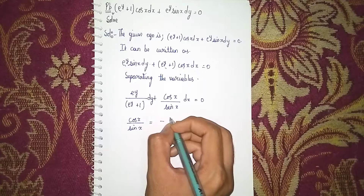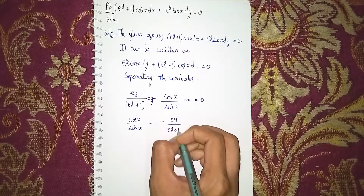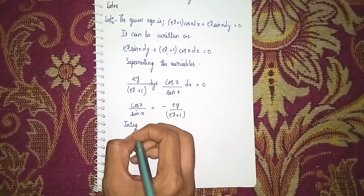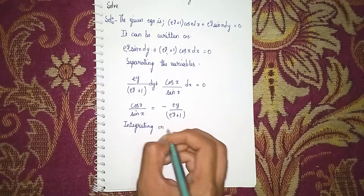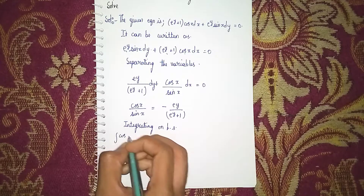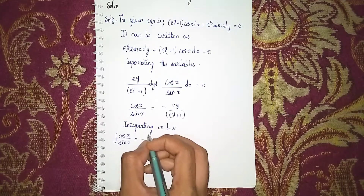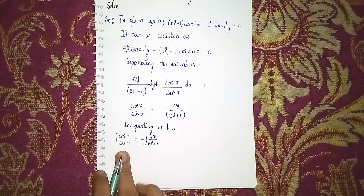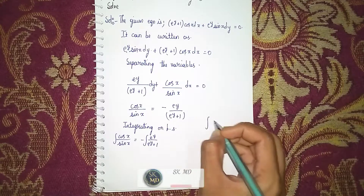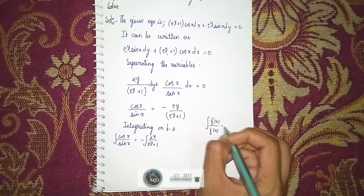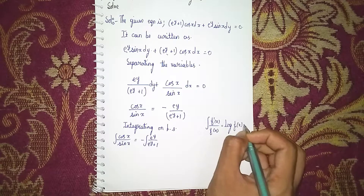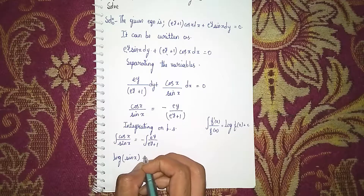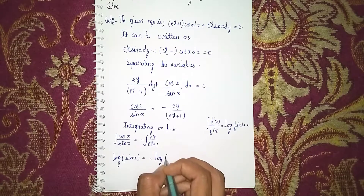Now integrating both sides: ∫cos x / sin x dx = −∫e^y / (e^(y+1)) dy. We apply the formula ∫f'(x)/f(x) dx = log|f(x)| + c. This gives: log|sin x| = −log|e^y + 1| + log c.